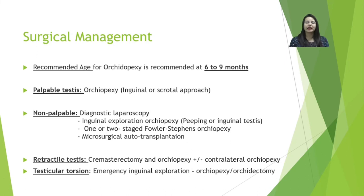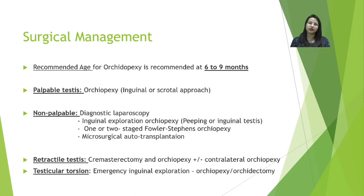For intra-abdominal testes, the Fowler-Stephens method of orchiopexy can be done in one or two stages. At centers with microsurgery capability, microsurgical autotransplant is also an option. For retractile testis, cremastrectomy is usually advised followed by orchiopexy, and contralateral orchiopexy can also be done in the same setting. In rare cases of testicular torsion, emergency inguinal exploration should be performed; after detorsion, if the testis is non-viable, orchidectomy is preferred, while a salvageable testis should undergo orchiopexy.